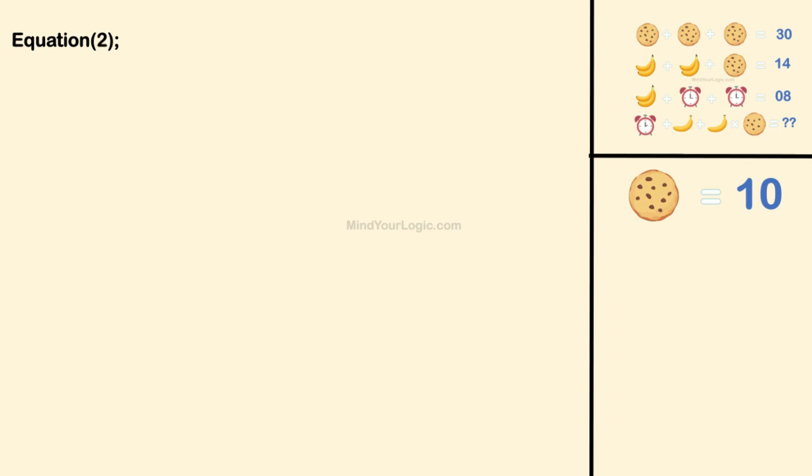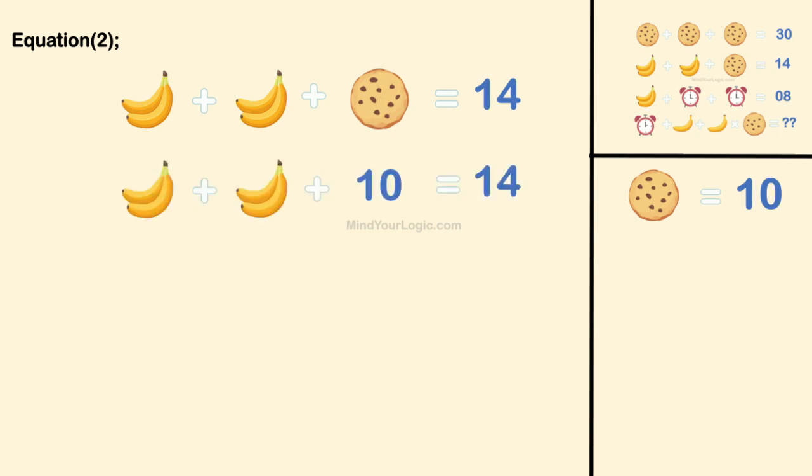Now, solving equation 2. 2 bananas plus 2 bananas plus cookie equals 14. Substituting the values, we get 2 bananas equals 2.